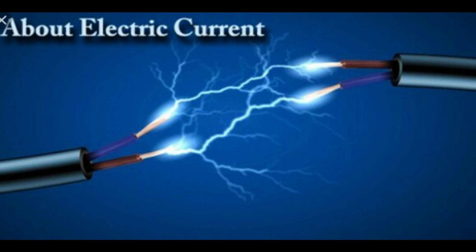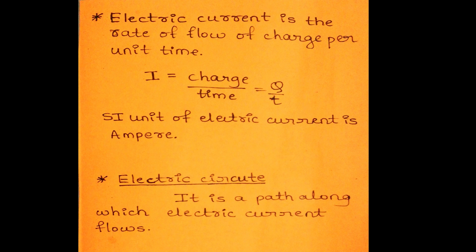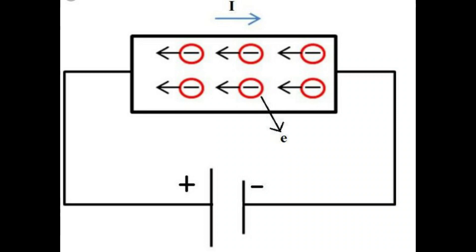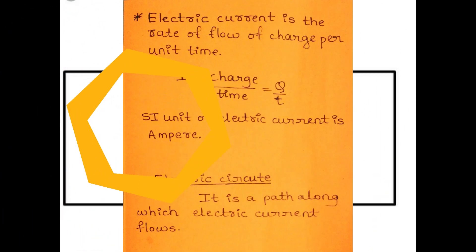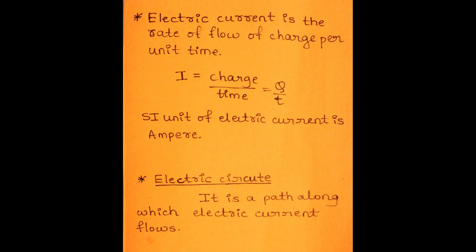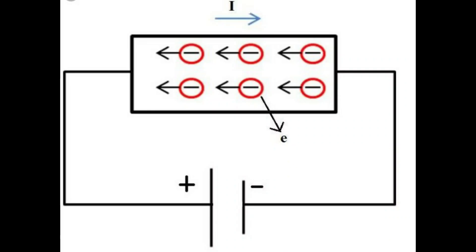Now, let's understand what is electric current. Electric current is defined as the rate of flow of charge per unit time. We can also understand this as the amount of charge flowing per second through a conductor. If Q charge is flowing through the conductor in time T, then current I is given by I equal to Q upon T — charge upon time. The SI unit of electric current is Ampere. The direction of electric current is opposite to the direction of flow of electrons, and the path along which the electric current flows is known as an electric circuit.